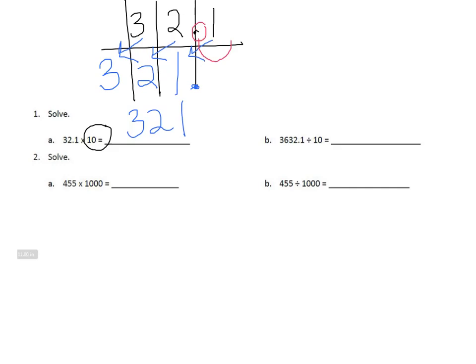For letter B, I want you to visualize the place value chart in your head and isolate each number. We have 3,632 and 1 tenth divided by 10. When we divide, we know our number is getting smaller. As we learned in the previous lesson, when we divide, the numbers on our place value chart move to the right, and the value changes by becoming 10 times smaller.